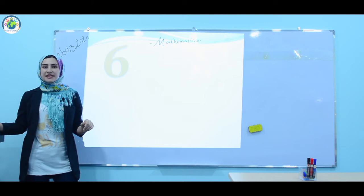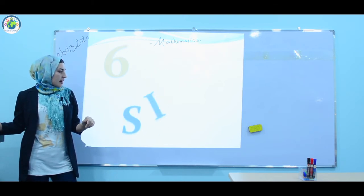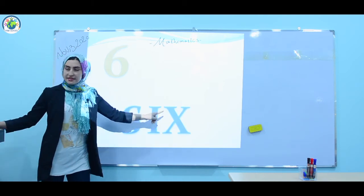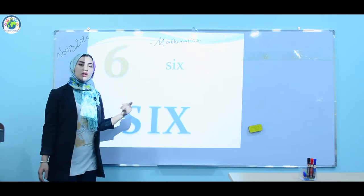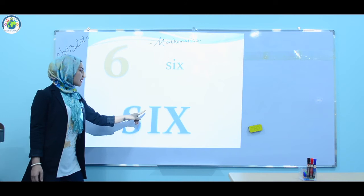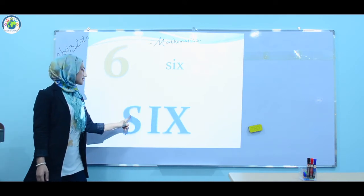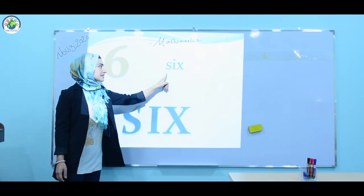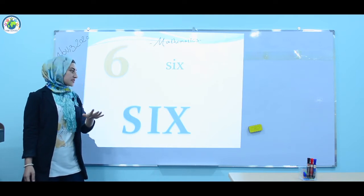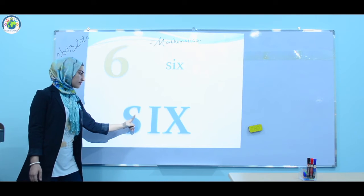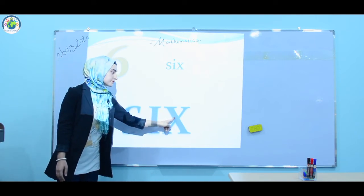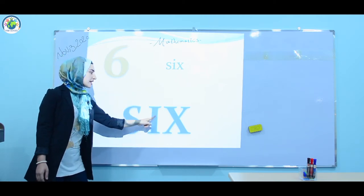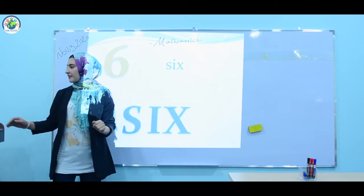And number six. S, I, X. Six. S, I, X. Six. Let's repeat it all together. Repeat it with me. S, I, X. Six. S, I, X. Six. S, I, X. Six. And now I'm silent — it's your turn to spell it. Good job. Once more all together. S, I, X. Six. Very good.